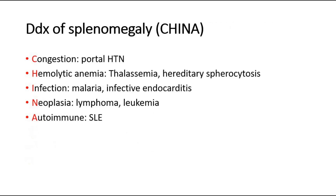If the liver is not palpable but only the spleen is palpable, the examiner might ask for the differential diagnosis of splenomegaly only. The mnemonic consists of: Congestion due to portal hypertension; Hemolytic anemia such as thalassemia or hereditary spherocytosis; Infection like malaria or infective endocarditis; Neoplasia like lymphoma or leukemia; and Autoimmune disease like SLE. These are the causes of spleen enlargement.